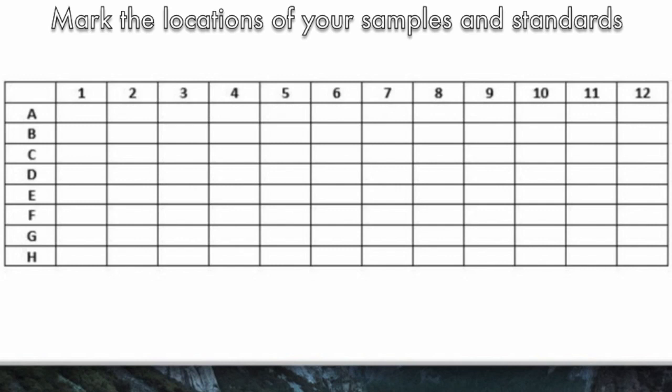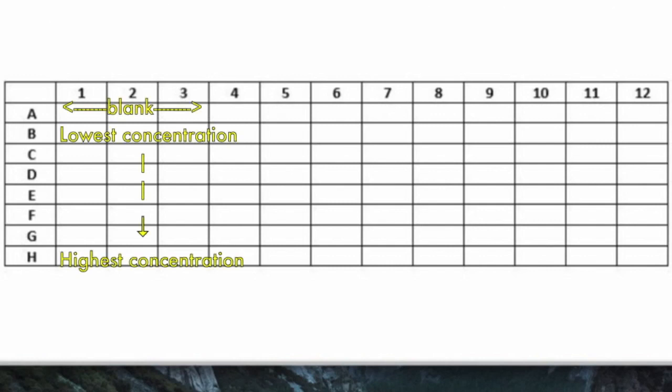It is generally easier if you put all standards in the same columns. That is A123 for the blank, B123 for the lowest concentrations, then C123 for the next, and so on.